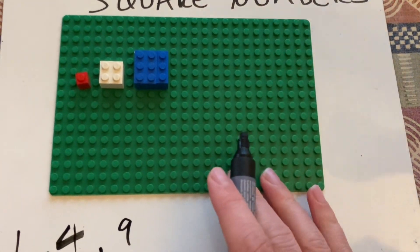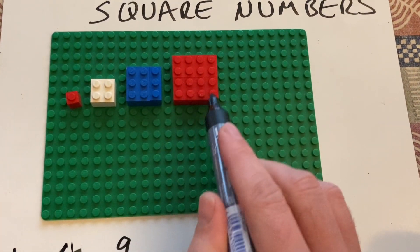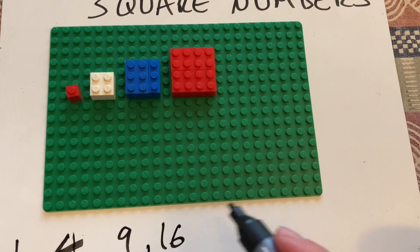And then the next square number? Four times four, which is sixteen. Okay, you've got four there by four there. Sixteen.